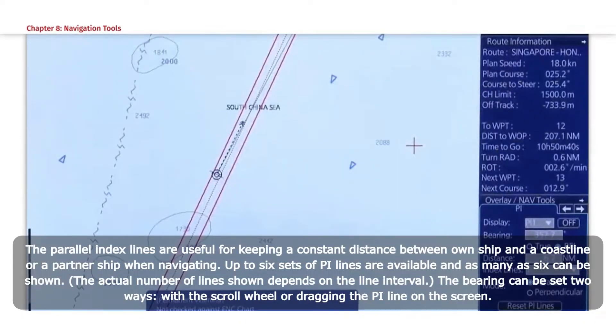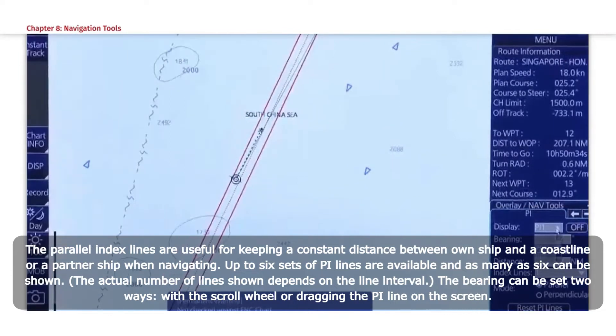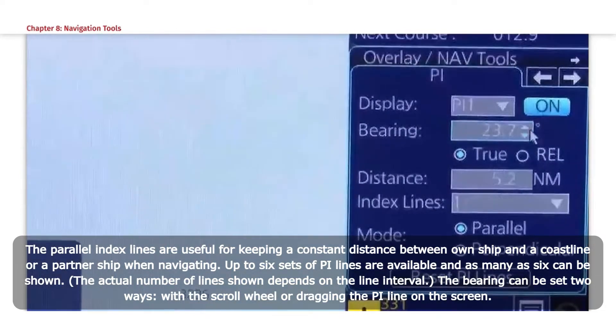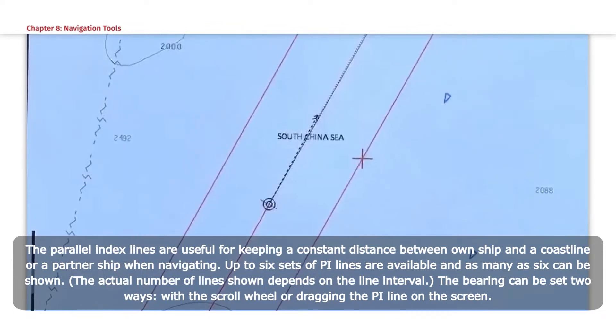The Parallel Index Lines are useful for keeping a constant distance between own ship and a coastline or a partner ship when navigating. Up to six sets of PI Lines are available and as many as six can be shown. The bearing can be set two ways: with the scroll wheel or dragging the PI Line on the screen.